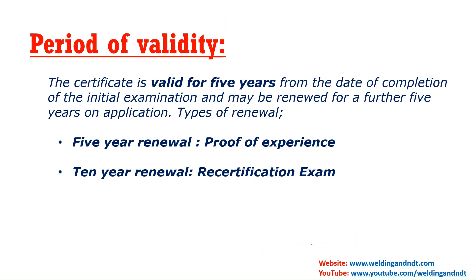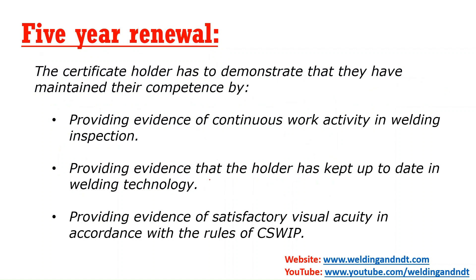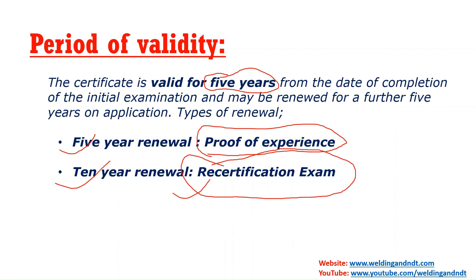If you pass the CSWIP 3.1 exam, your certificate will be valid for 5 years. After 5 years, you must go for a 5-year renewal program, which requires only proof of experience — your certificate will then be extended for a further 5 years. After 10 years, you will have to take a recertification exam for the 10-year renewal.